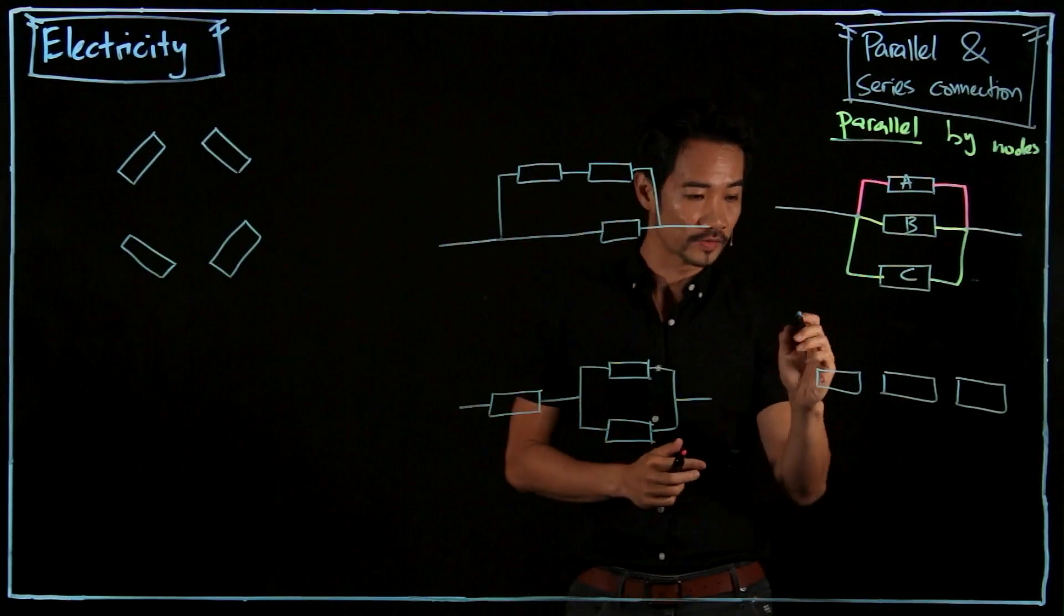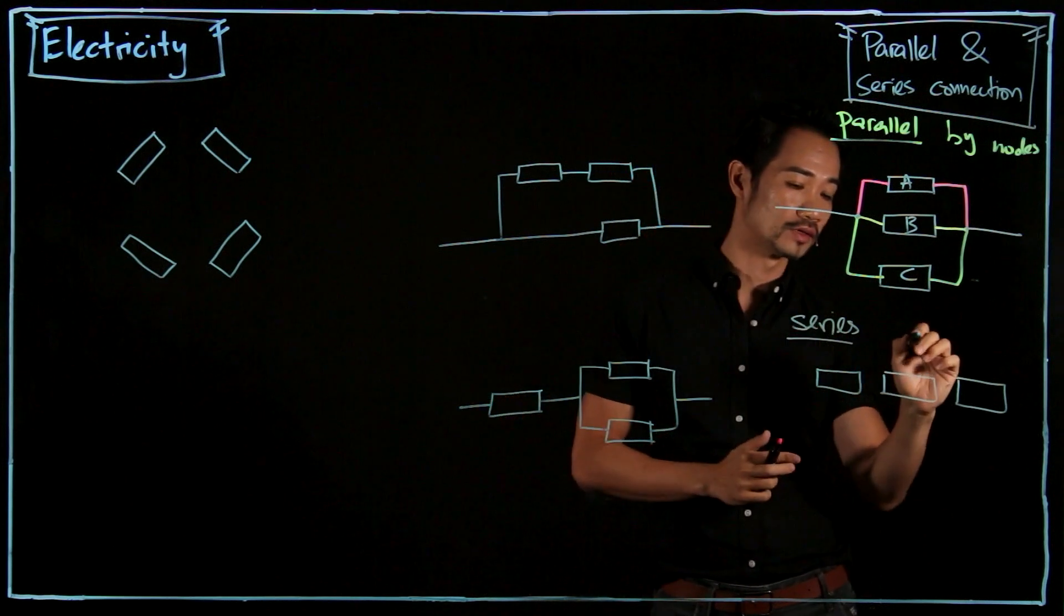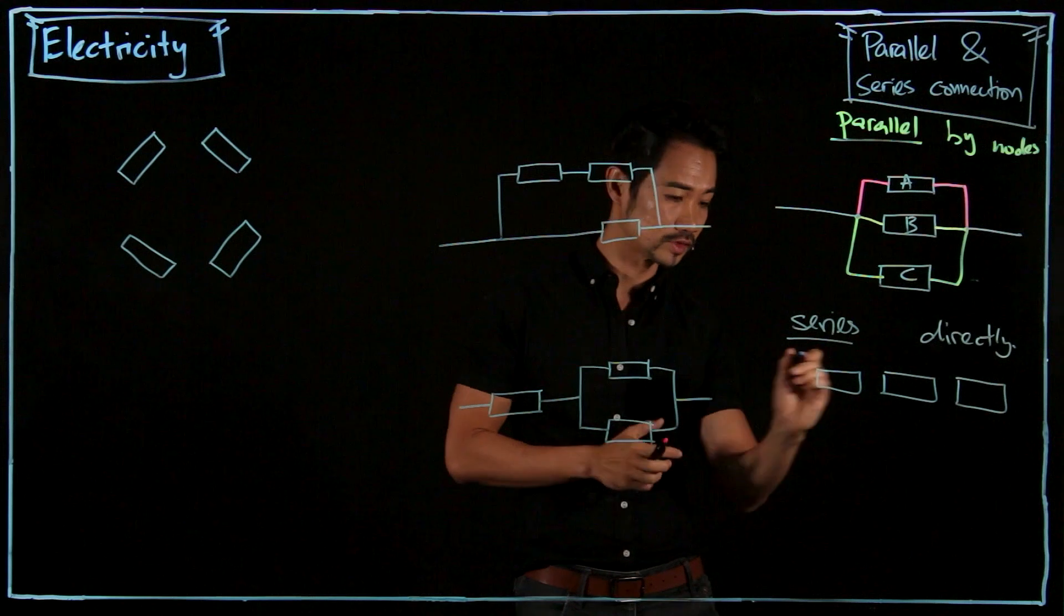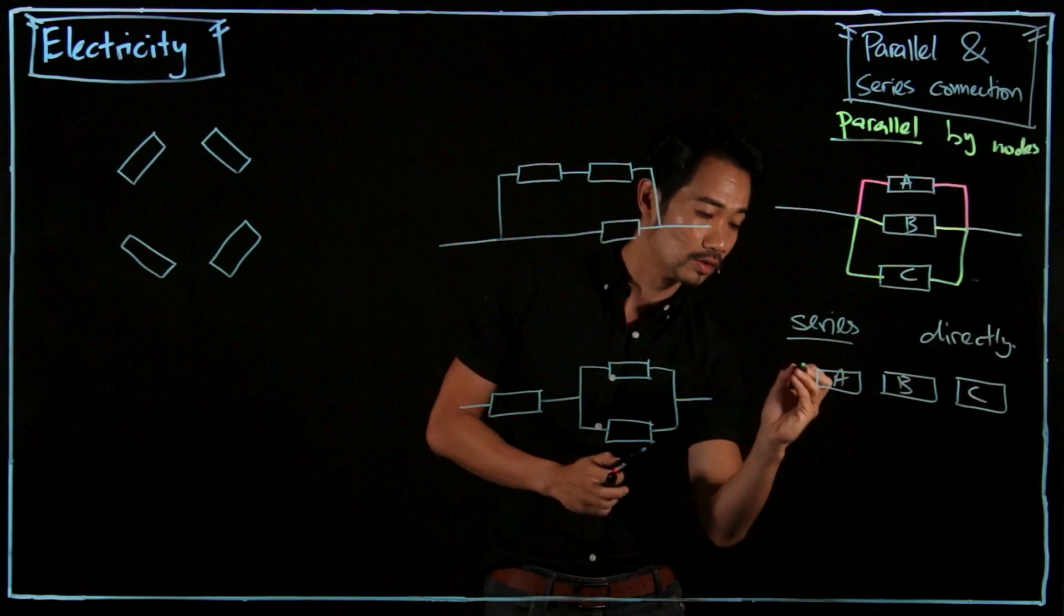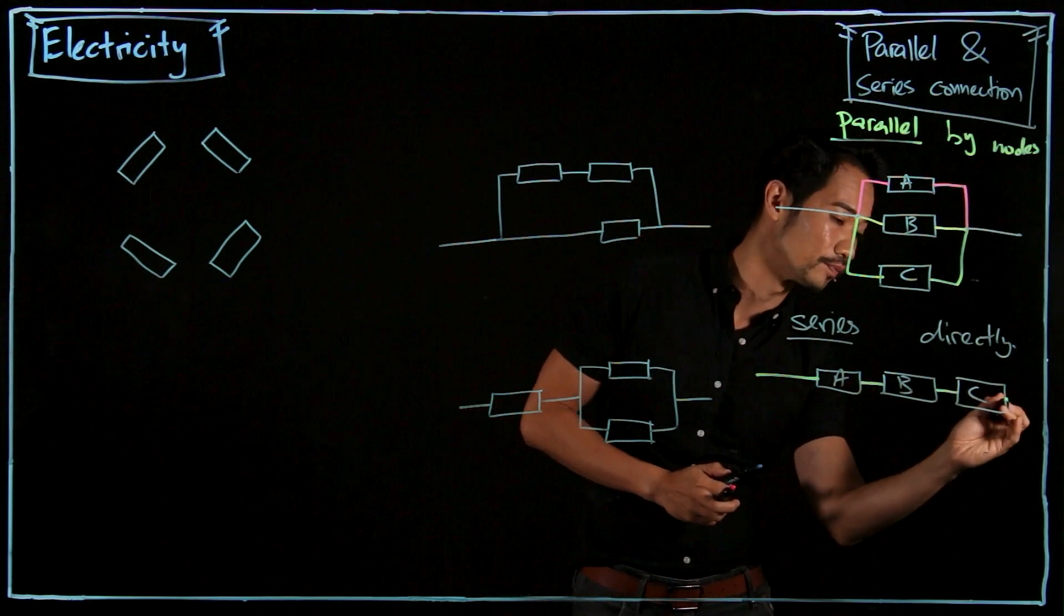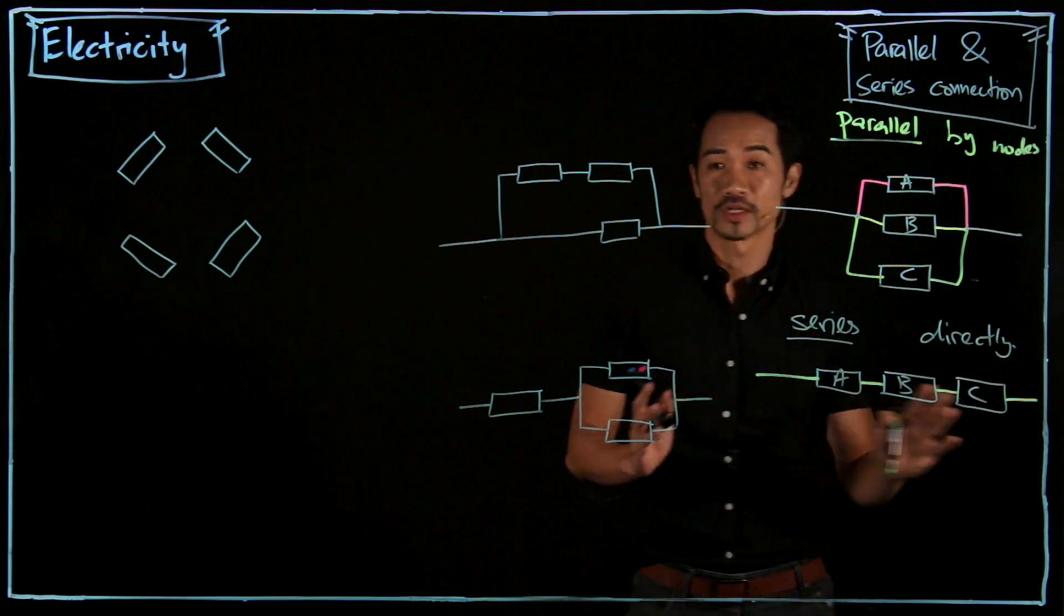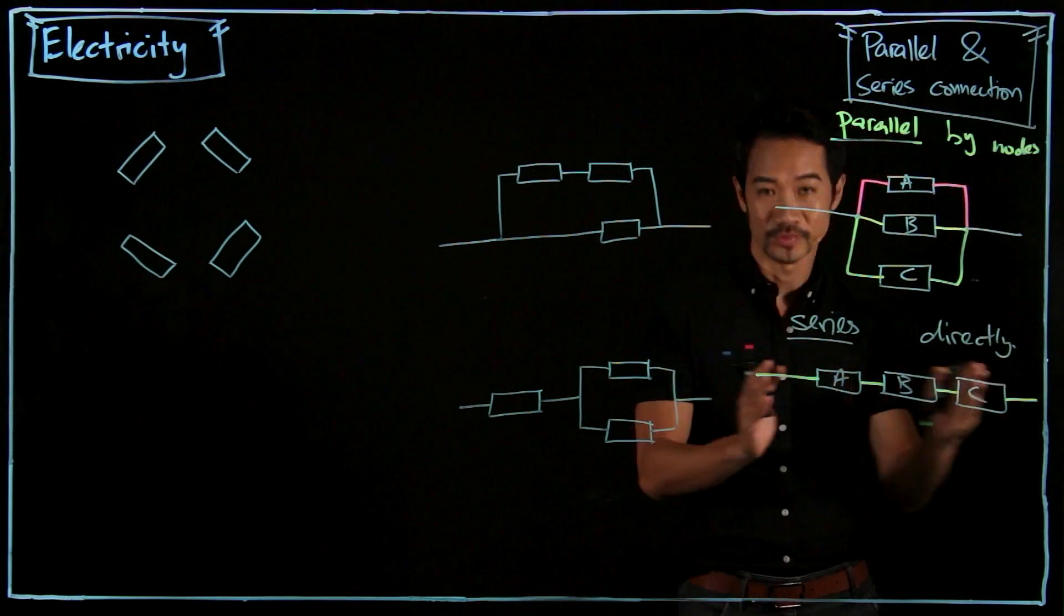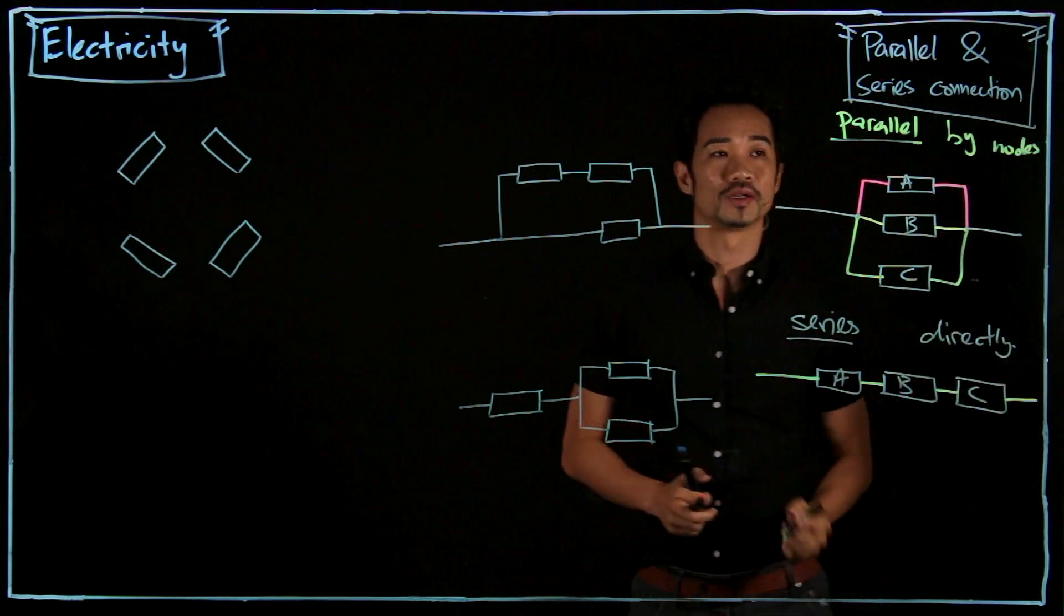Okay, compare it with a series connection. And then you will be clearer. Series connections are connected directly. Alright? So if I have resistor A, B, and C, there is only one pathway or one wire that is passing through all of them. So this is like three stations, maybe on the east-west line. You have Bugis, Lavender, and then you have Kallang. One straight after another. So this is series. This is parallel.